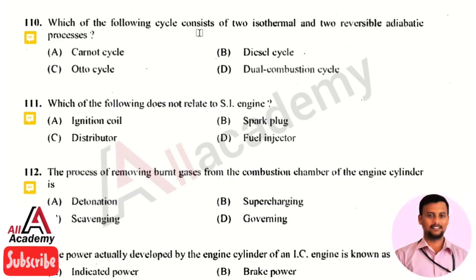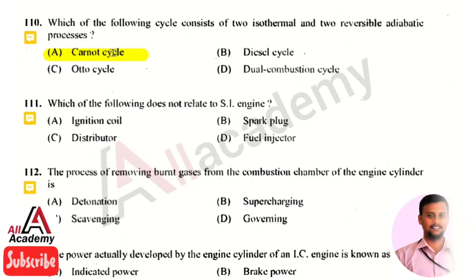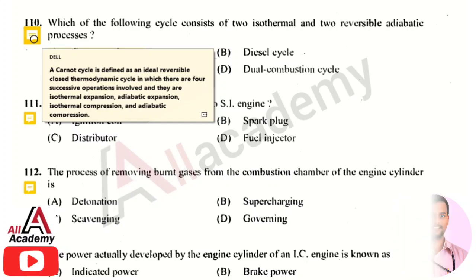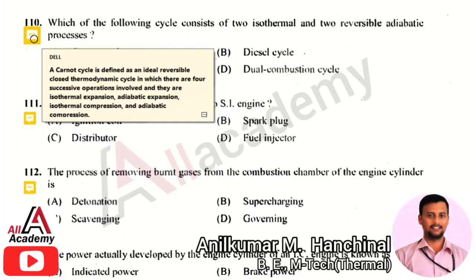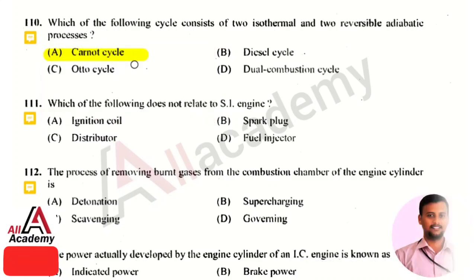The cycle that consists of two isothermal and two reversible adiabatic processes is the Carnot cycle. The Carnot cycle is an ideal reversible closed thermodynamic cycle which consists of four successive operations: isothermal expansion, adiabatic expansion, isothermal compression, and adiabatic compression — two isothermal and two reversible adiabatic processes.